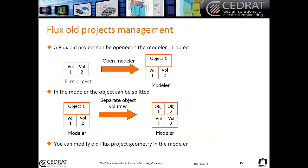In more detail, for Flux old project management: if you have a Flux project with two volumes and open it in the modeler, you will still have two volumes but as one object for all the volumes of your device. However, it is possible to split the object so that the number of objects matches the number of volumes. Of course, after opening an old project in the modeler, you can then modify the geometry within the modeler.